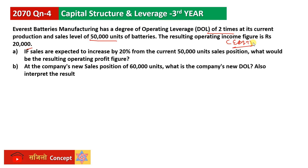Operating income is also called operating profit or EBIT. EBIT stands for Earning Before Interest and Tax, or Operating Profit. We will now discuss the first part of this question.